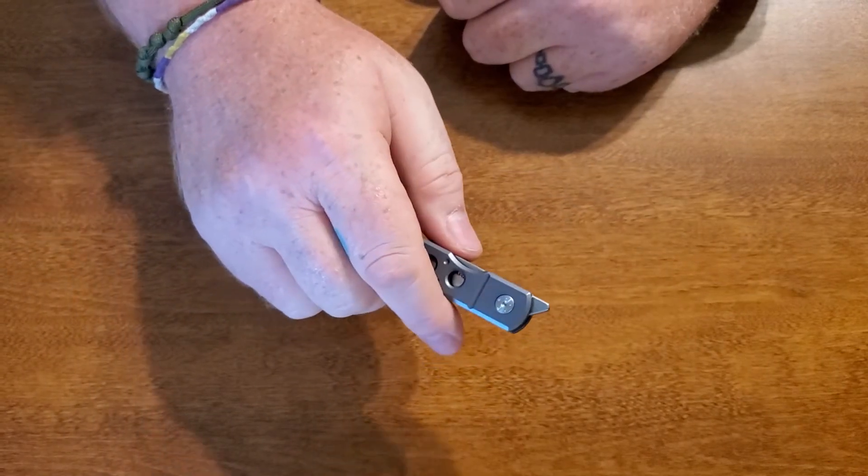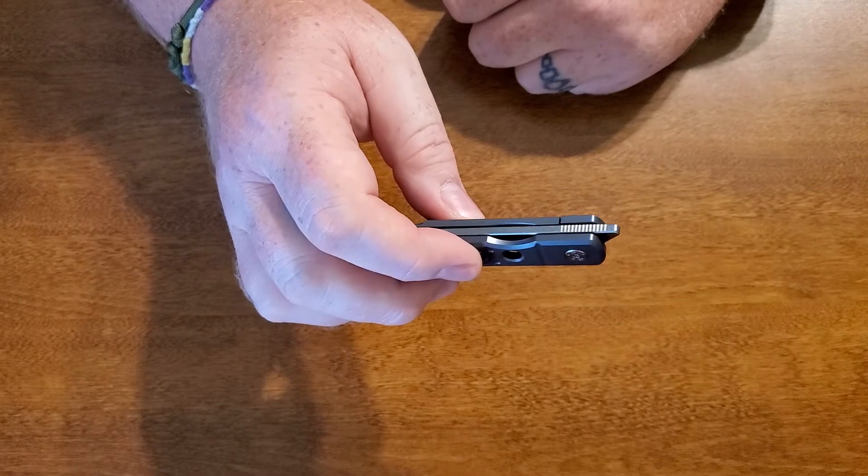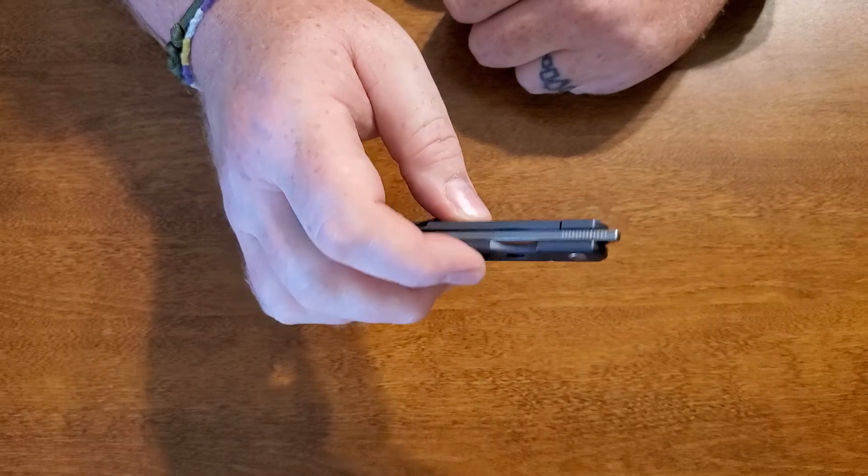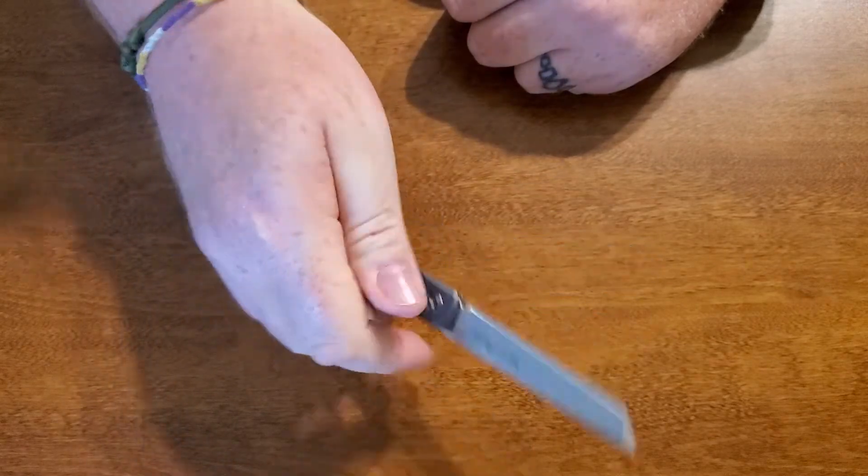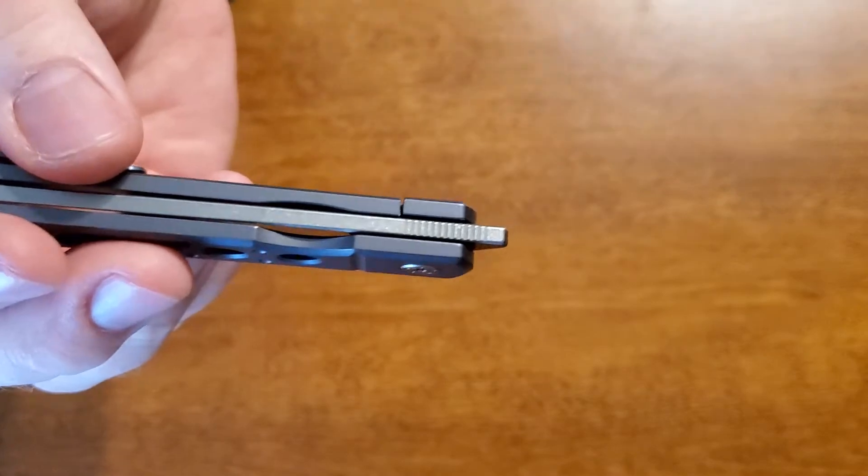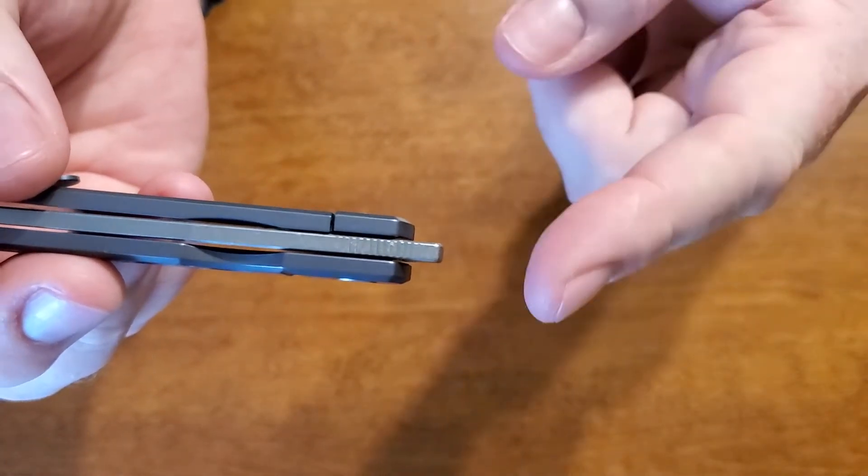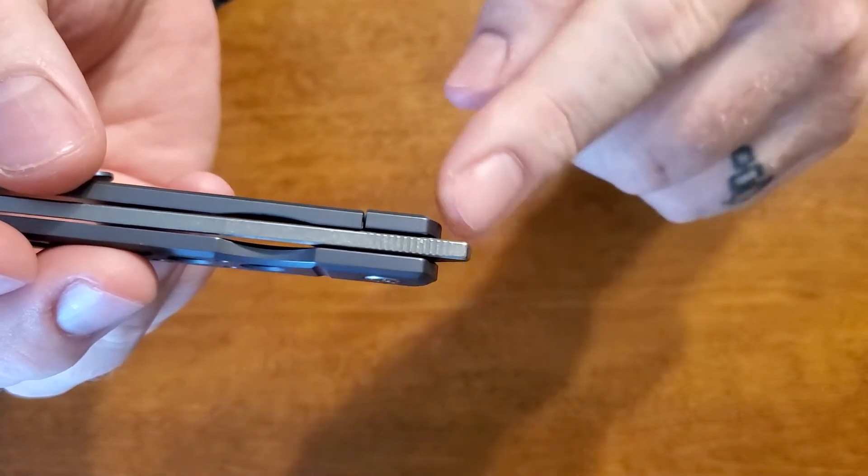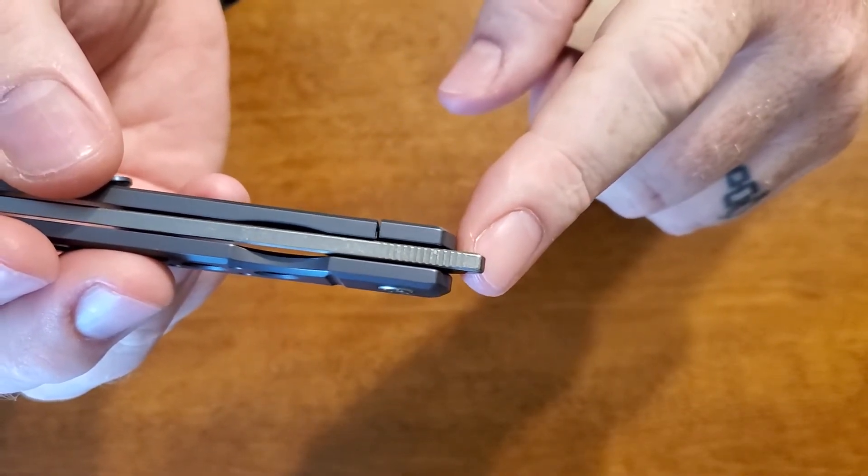The other place where you see some jimping, because it's a front flipper, if for any other reason, you're going to see it right there on the actual flipper, so that your thumb has something to grab when you're trying to open it. My complaint there is, let's see, there we go, they stopped short of the tip.